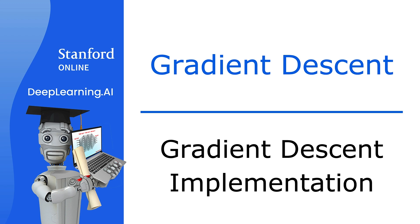To fit the parameters of a logistic regression model, we're going to try to find the values of the parameters w and b that minimize the cost function j of w and b. And we're going to apply gradient descent to do this. Let's take a look at how.